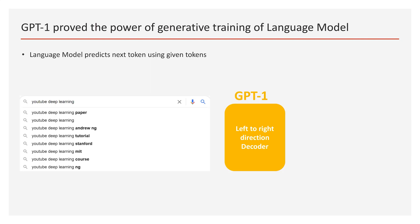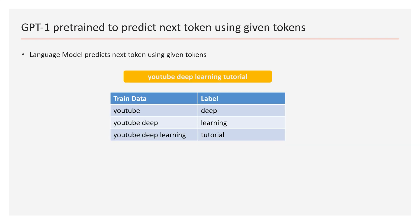GPT-1 proved the power of generative training of a language model. GPT is basically a language model which can predict the next word just like this slide. Training a language model can be unsupervised, since you can use previous tokens as training data and the next token as the desired prediction. Even with one sentence from this slide, you can create three training datasets.